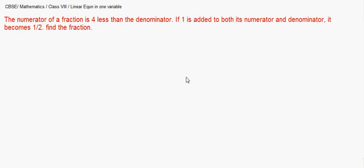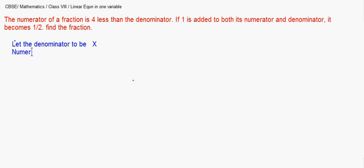Let's solve this question. The numerator is expressed in terms of the denominator. Let the denominator be x. Since the numerator is 4 less than the denominator, the numerator becomes x minus 4.